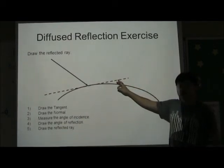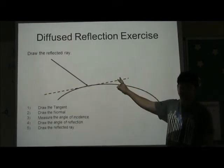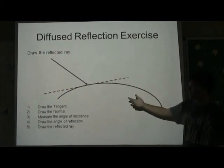So now, we take this tangent as the reflecting surface, and we follow the four steps.